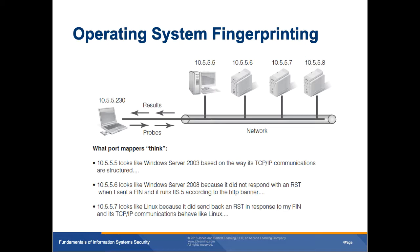Operating system fingerprinting involves figuring out what operating system a target is running based on responses to port scans. You can determine the actual version of software — whether it's Windows Server 2003, 2008, or Linux — for example through the HTTP banner of IIS. There are certain ways to identify what type of OS a machine is. You try to hide this as much as possible in your configurations and settings, but it is sometimes still possible.